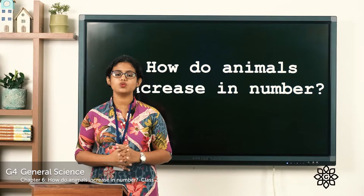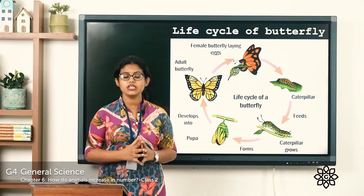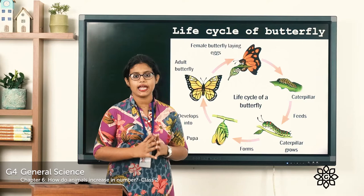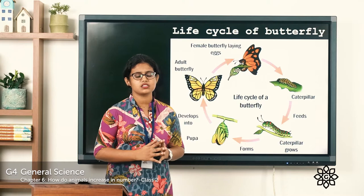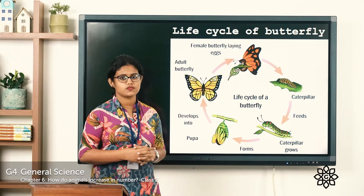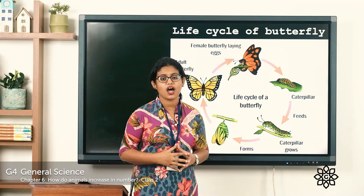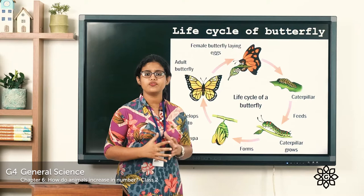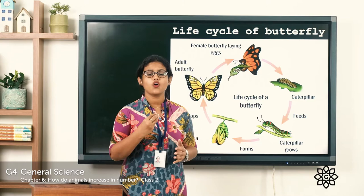So coming to the life cycle of the butterfly. The female butterfly lays eggs on plants, and they lay lots of eggs so that some of them survive. From these eggs hatch larvae, which we call caterpillars. These caterpillars feed on plants.